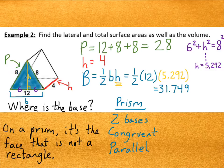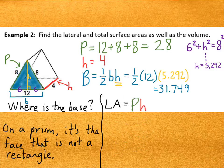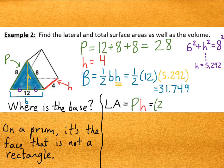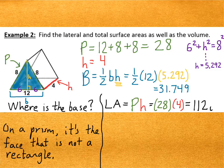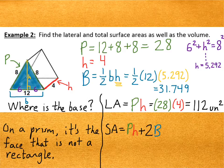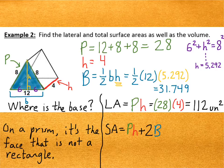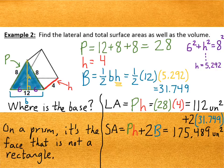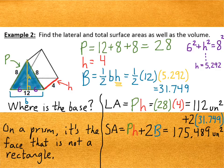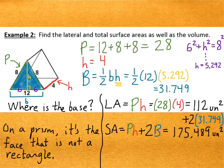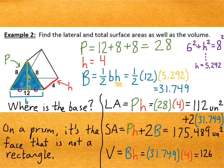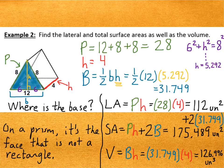So, now we just need to plug it into the lateral and total surface area formulas. The lateral area is perimeter of the base times height, so that would be 28 times 4. That's 112. Since there are no units given, I'm going to put units squared. To get the total surface area, I need to add two of the areas of the bases. So, I'm going to add 2 times 31.749, and I'll get 175.489 units squared. So, those are my two surface areas. What about the volume? That's the area of the base times the height. So, I've already got those numbers. 31.749 times 4, and I get 126.996. And my units are units cubed this time.